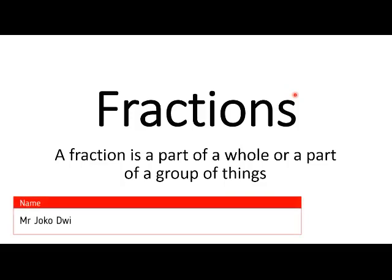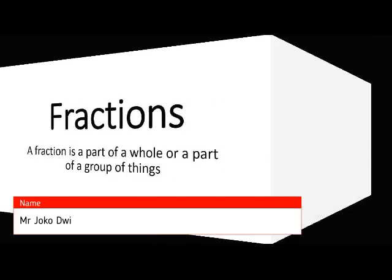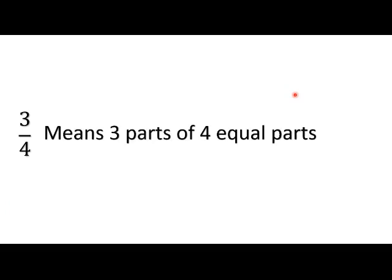Let's make it simple. For example, 3 over 4, it means 3 parts of 4 equal parts. 3, it's called numerator, and 4 is called denominator.